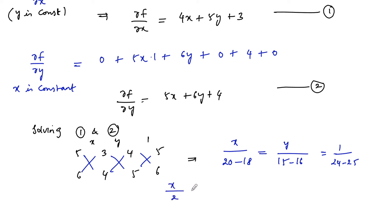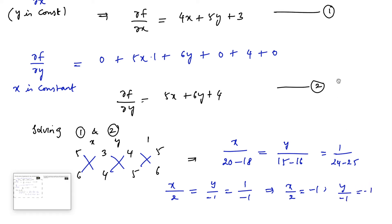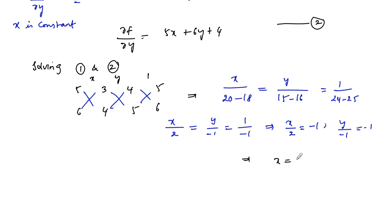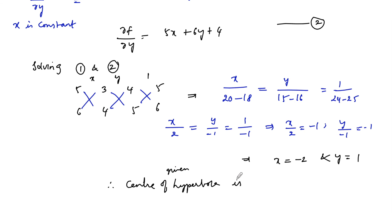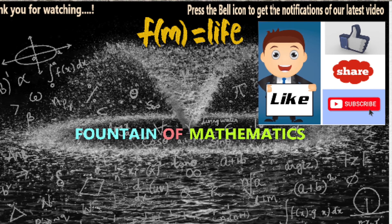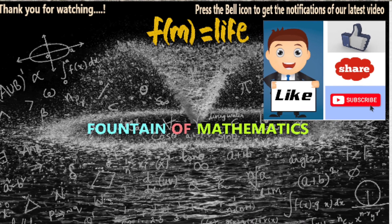So we get x/2 = y/(−1) = 1/(−1). Therefore x = −2 and y = 1. The center of the given hyperbola is (−2, 1). Please like, share, subscribe, and support us. Thank you.